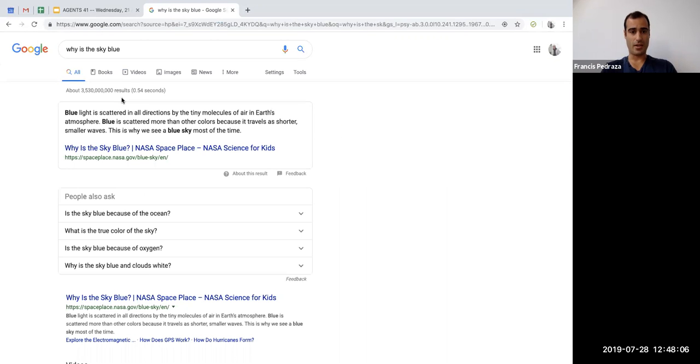Blue light is scattered in all directions by the tiny molecules of air in earth's atmosphere. Blue is scattered more than other colors because it travels as shorter, smaller waves. This is why we see a blue sky most of the time. Oh, good. Okay. That's the answer. I'm now suddenly clear and not confused. Wrong. I'm so much more confused. I know more than I did a second ago.